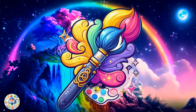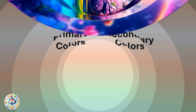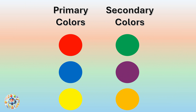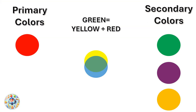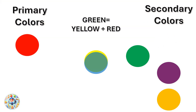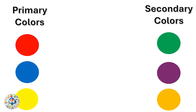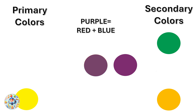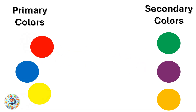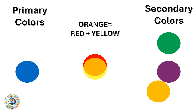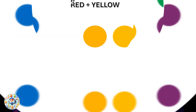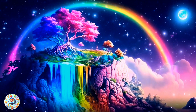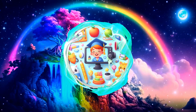A magical paintbrush, oh so grand, painted the world with colors so grand. Sky blue, grass green, flowers in hand. Secondary colors — green, purple, and orange. A world of colors, let's see.